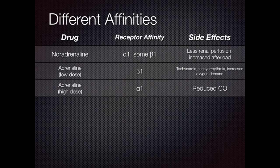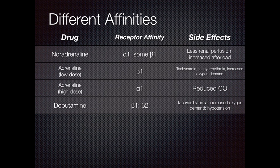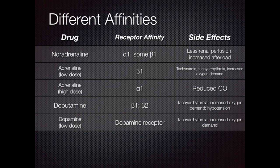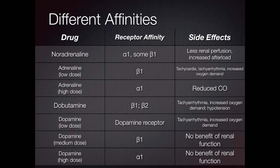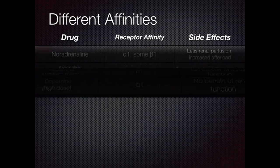Adrenaline in high doses affects alpha-1; however, it can reduce cardiac output at too high a concentration. Dopamine acts on beta-1 and can cause tachyarrhythmia and increased oxygen demand. It can also act on beta-2, causing a risk of hypotension. Dopamine in low doses affects the dopamine receptor, with side effects of tachyarrhythmia and increased oxygen demand. Dopamine in medium doses affects the beta-1 receptor, with no benefit to renal function. Dopamine in high doses affects the alpha-1 receptor and, once again, does not benefit renal function but instead increases cardiac output.